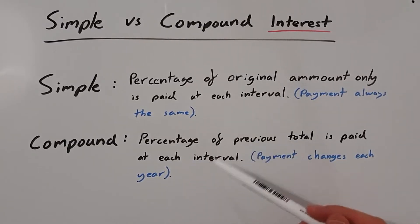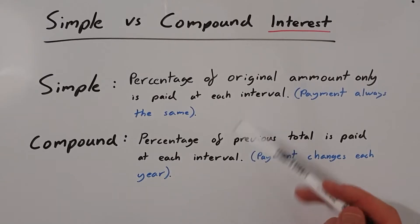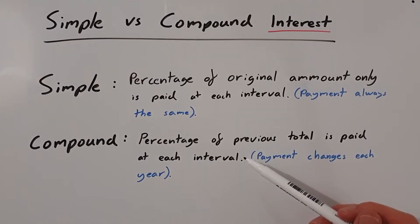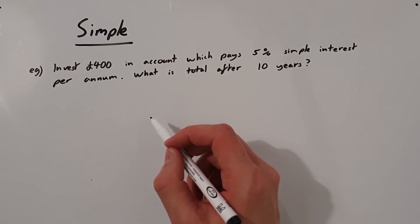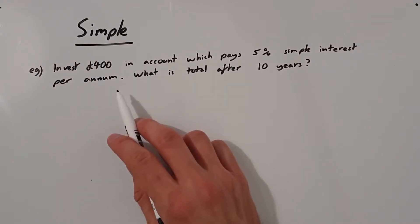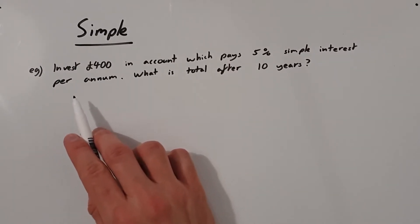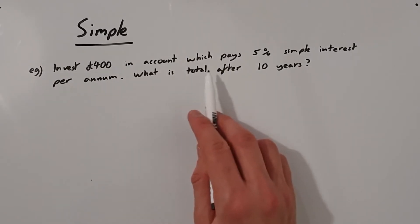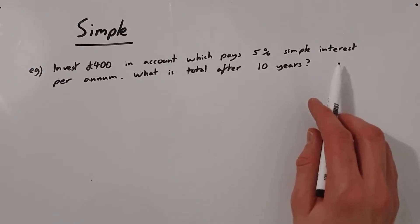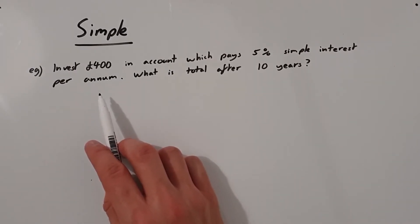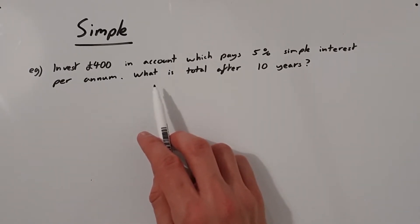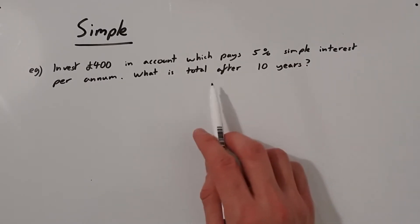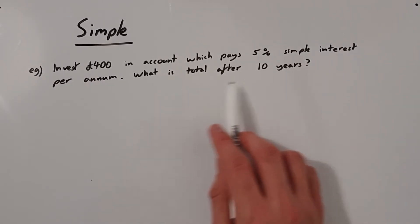We'll go over some examples now of how you would put some numbers around these and show you more explicitly how they work. So let's look at an example of a simple interest question. We've invested £400 in an account which pays 5% simple interest per annum — per annum meaning per year. What is the total after 10 years?